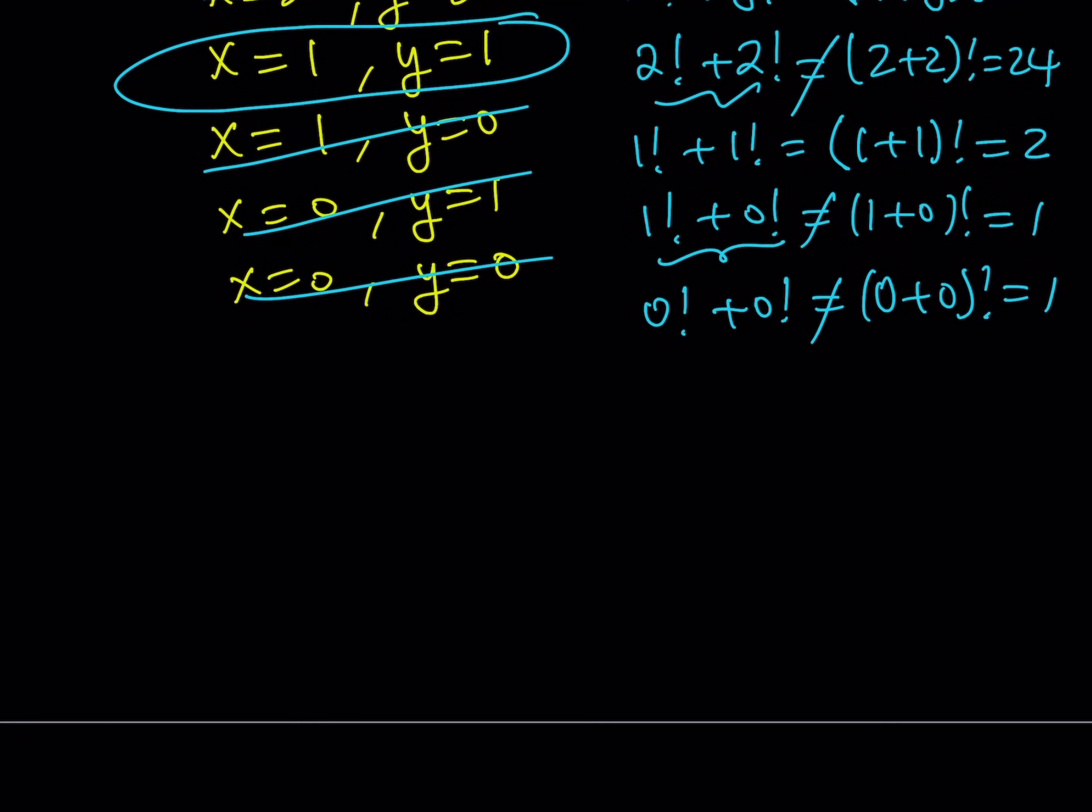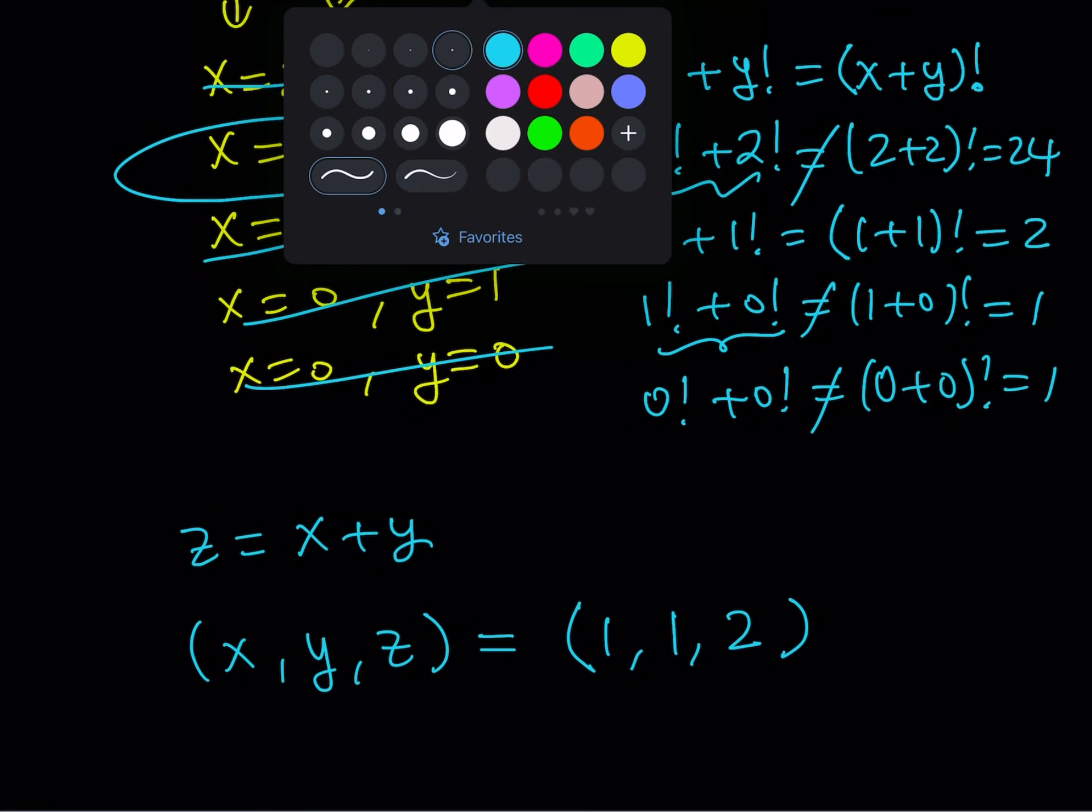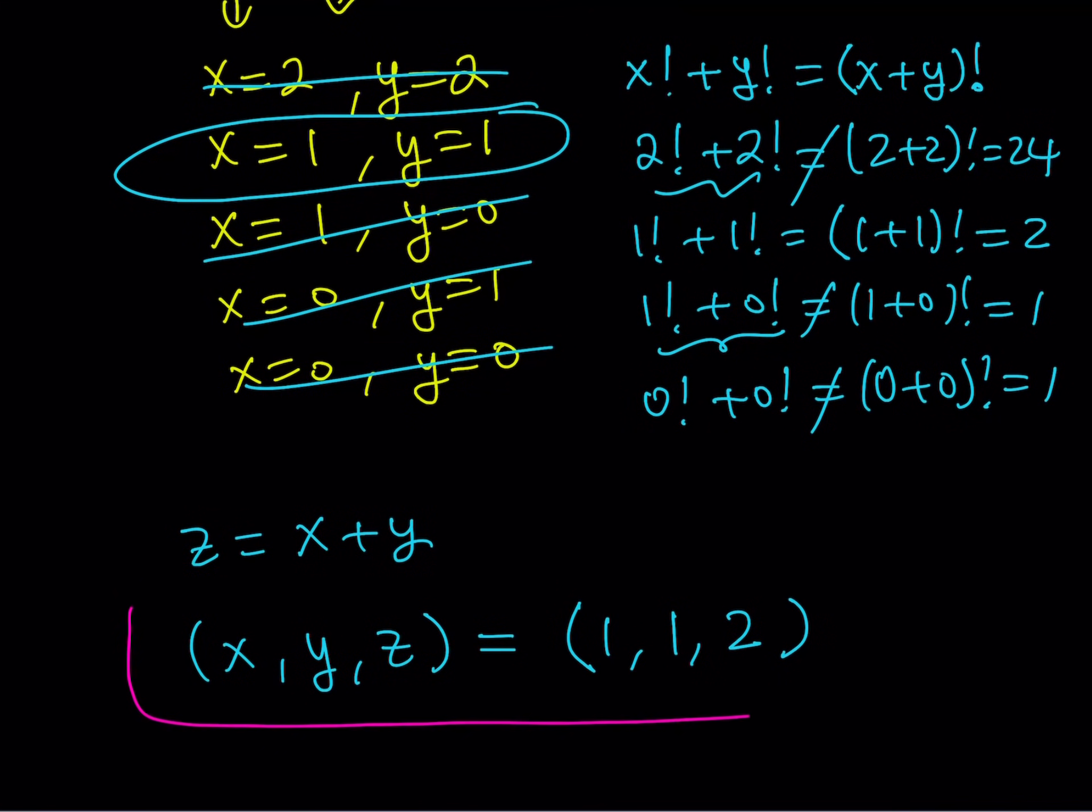But that means that since z is equal to x plus y, I can basically write my solution as an ordered triple. And that would look like 1, 1 and 2. And this brings us to the end of this video.